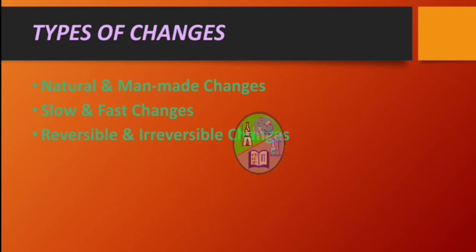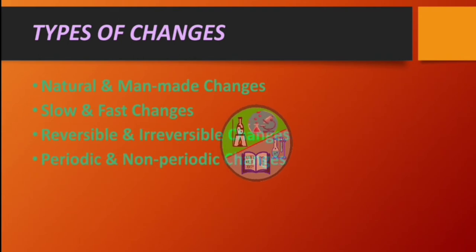Well, the changes that can't be reversed back is called an irreversible change. Example: burning of paper, cutting of vegetables, etc. Next is periodic and non-periodic changes.